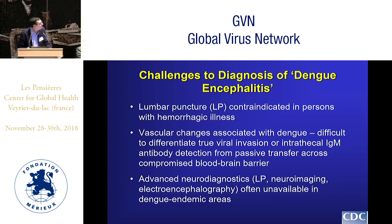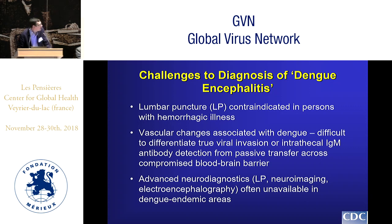There are also challenges to the actual diagnosis of dengue encephalitis. A lumbar puncture — the way we obtain cerebrospinal fluid — is generally contraindicated in persons with hemorrhagic illness. The vascular changes associated with dengue make it difficult to differentiate true viral invasion or intrathecal IgM synthesis from passive transfer across a compromised blood-brain barrier. Advanced neurodiagnostics including lumbar puncture, neuroimaging, and electroencephalography are sometimes unavailable in dengue endemic areas. It is probably safe to say that in rare cases dengue can lead to neuroinvasive disease, but given the tremendous global burden, it seems to be a relatively uncommon manifestation.